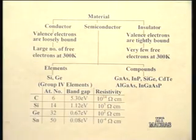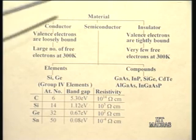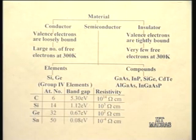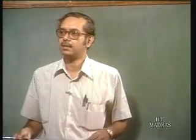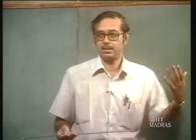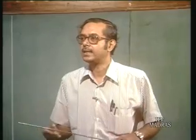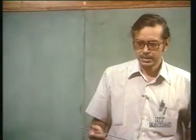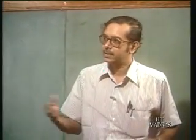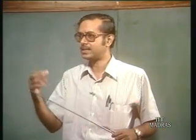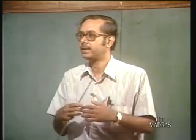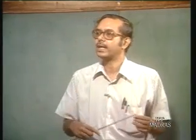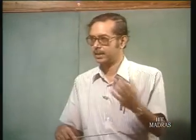Any material can be classified in terms of its electrical properties as a conductor, insulator or a semiconductor. Now what is it that makes a material a conductor or another material an insulator? You know that any solid has a large number of electrons but all of them cannot participate in electrical conduction — only the valence electrons or the electrons in the outer shell can, but they are bound and cannot move freely.